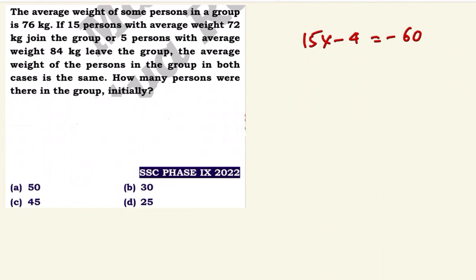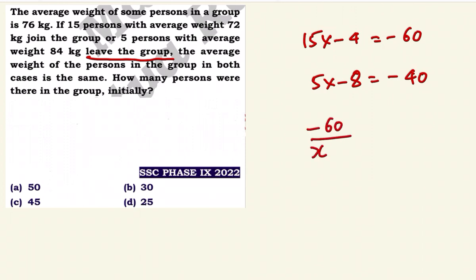So minus 60 divided by x plus 15 is equal to minus 40 divided by x. That means minus 60 divided by x members for the joining case. Now that gives us the equation minus 60 divided by x plus 15, which equals minus 40 divided by x.